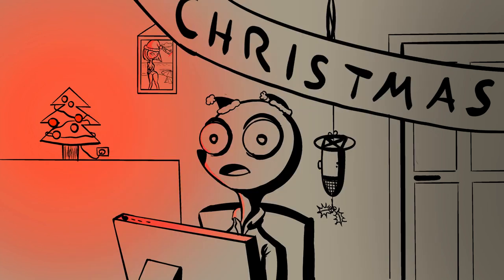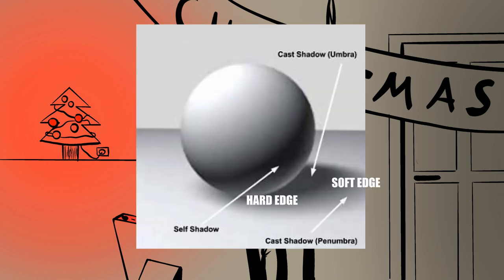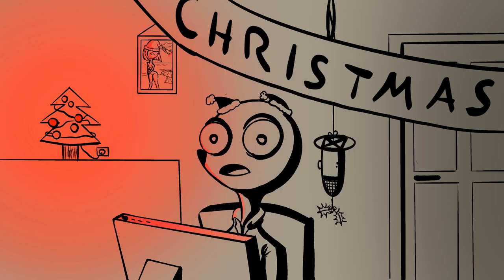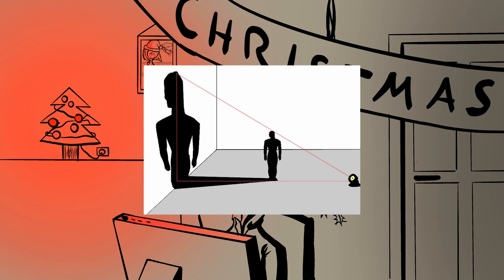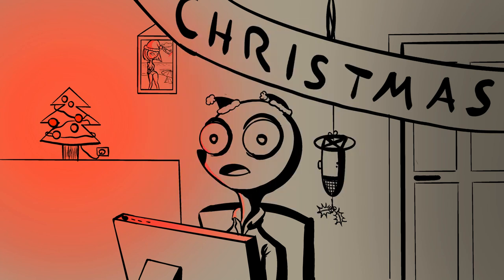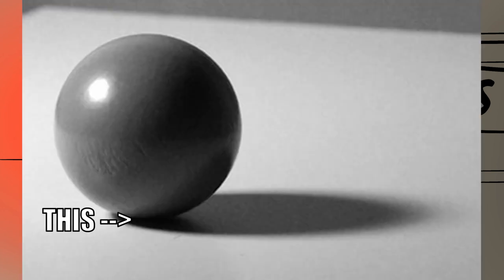Imagine your light source is a giant airbrush that sprays paint, and everywhere the paint doesn't hit will be a cast shadow. Another thing to know about these types of shadows is that they have a relatively hard edge that gets softer and softer the greater the distance the shadow is cast over. And if they are cast onto a surface that bends or creases, the shadow will adapt to that surface, making it, for example, super short.